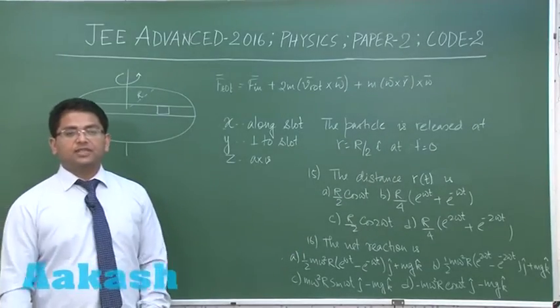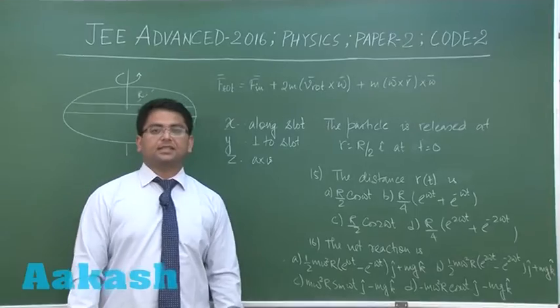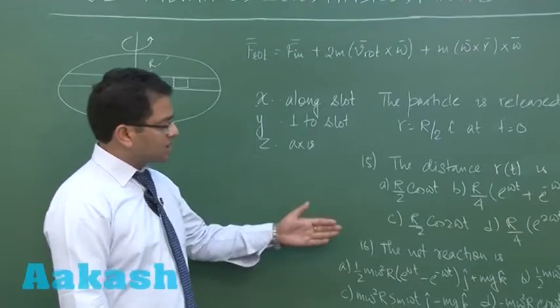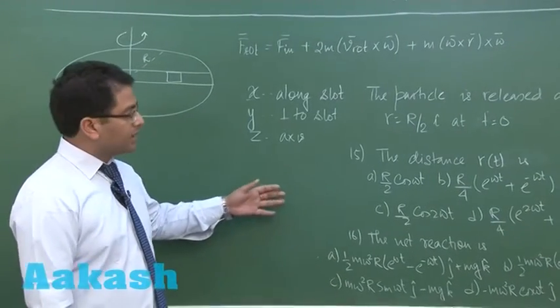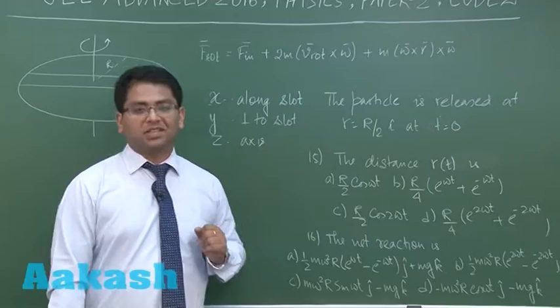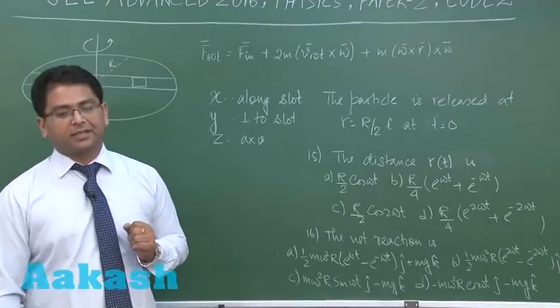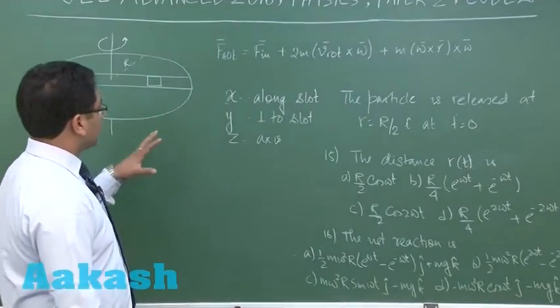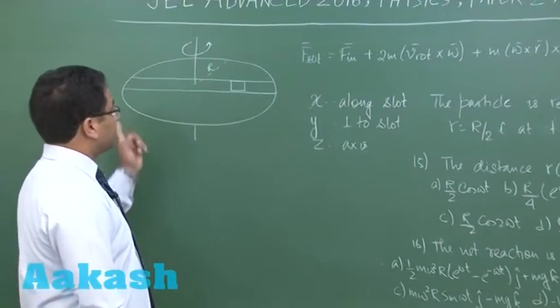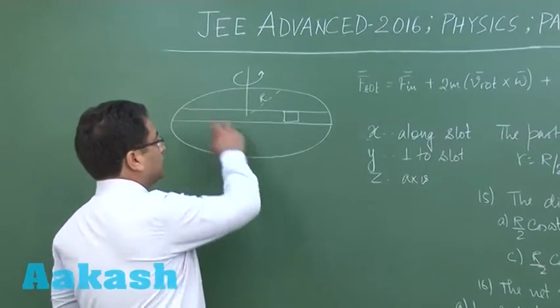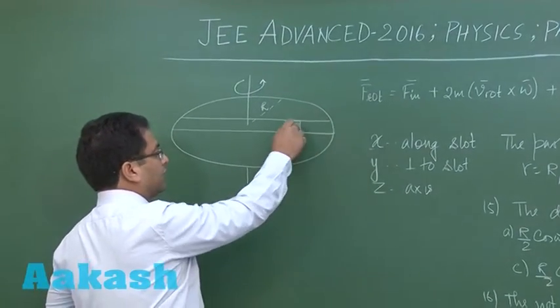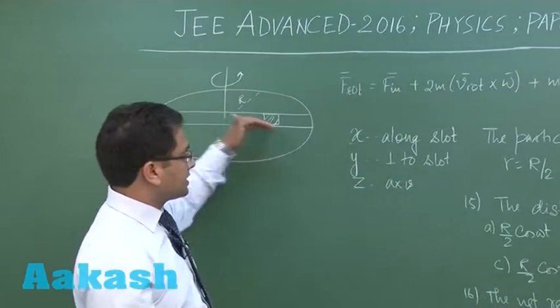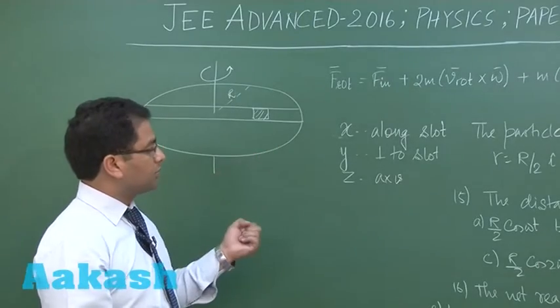Alright now we will proceed to section 3 and section 3 has 2 paragraphs and each paragraph has 2 questions associated. And for a correct answer you would be awarded 3 and there is no negative marking. And for each question there is 1 single option. This one is quite a nice question where there is a rotating frame and there is a groove on the rotating frame where a block would move. The surface is smooth. X is taken along the slot.